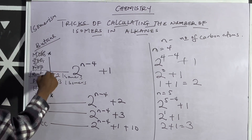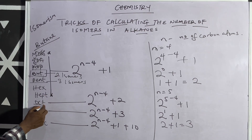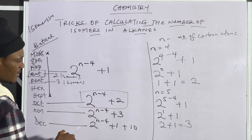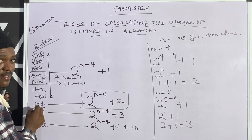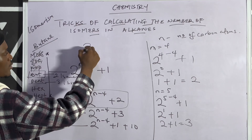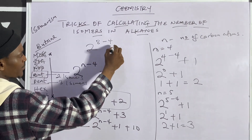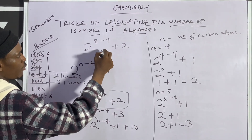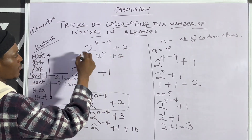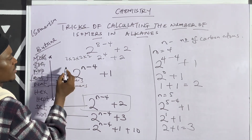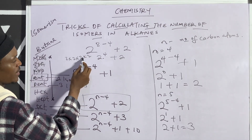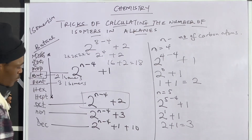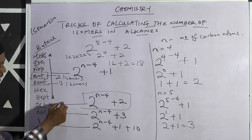As soon as you get to octane, you use the octane formula: 2^(n−4) + 2. The n value for octane is 8, so it becomes 2^(8−4) + 2. Eight minus four is 4, giving us 2^4 + 2. Two to the fourth power is 2×2×2×2 = 16. So 16 + 2 = 18. Octane has 18 isomers.